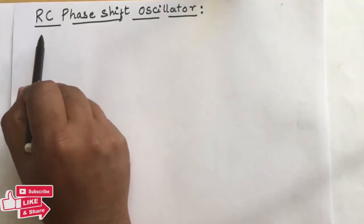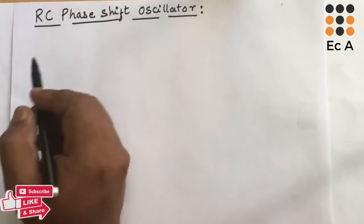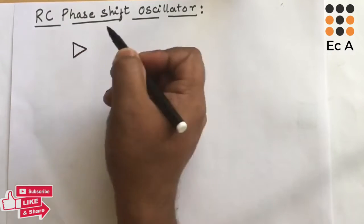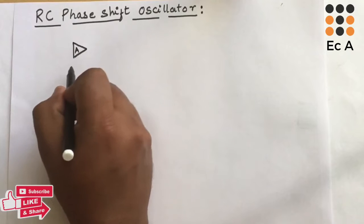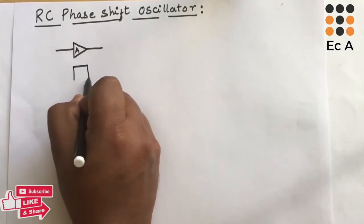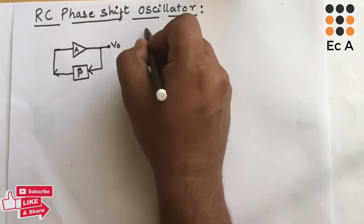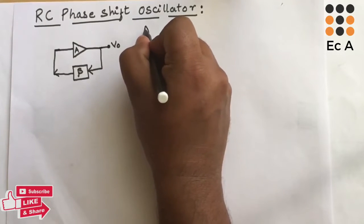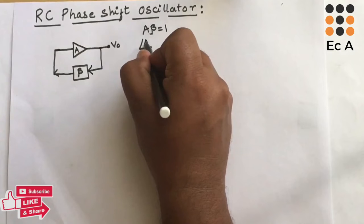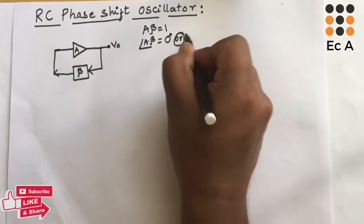Hello friends, welcome to EC Academy. In this lecture we will understand the RC phase shift oscillator. Generally, any oscillator consists of two stages: the first stage is the amplifier stage and the second stage is the feedback stage. Any oscillator should satisfy the Barkhausen criteria, which states that A·β should be equal to 1 and the phase angle between input and output should be equal to 0 degrees or 360 degrees.